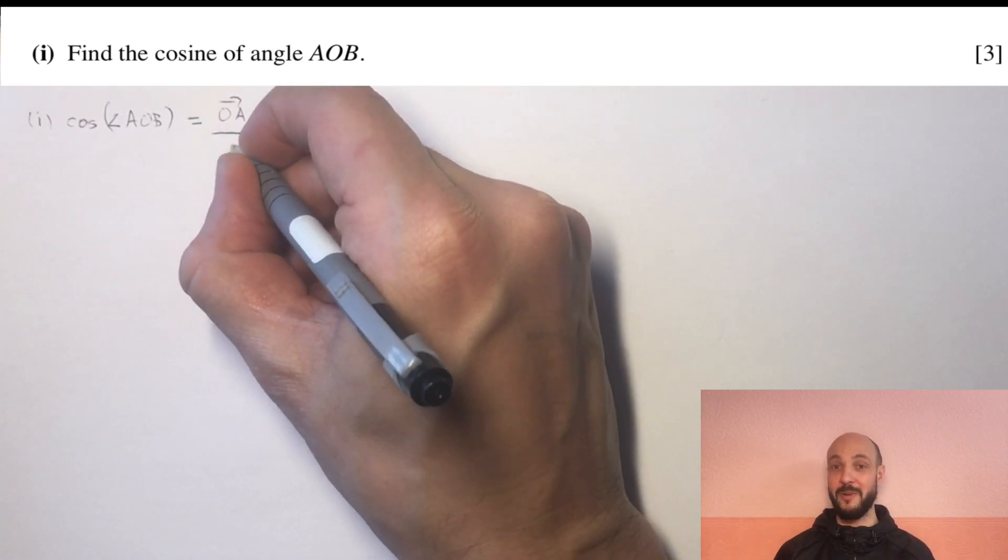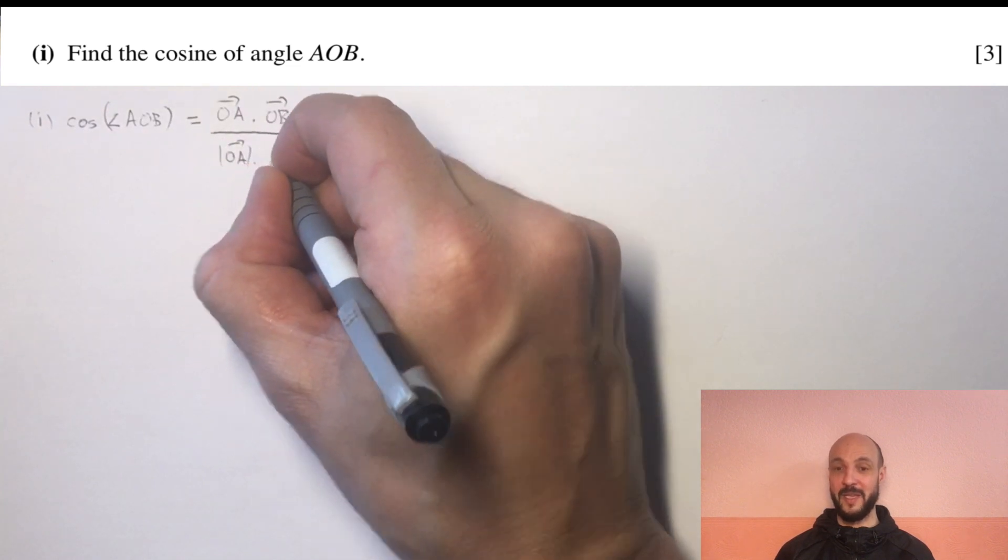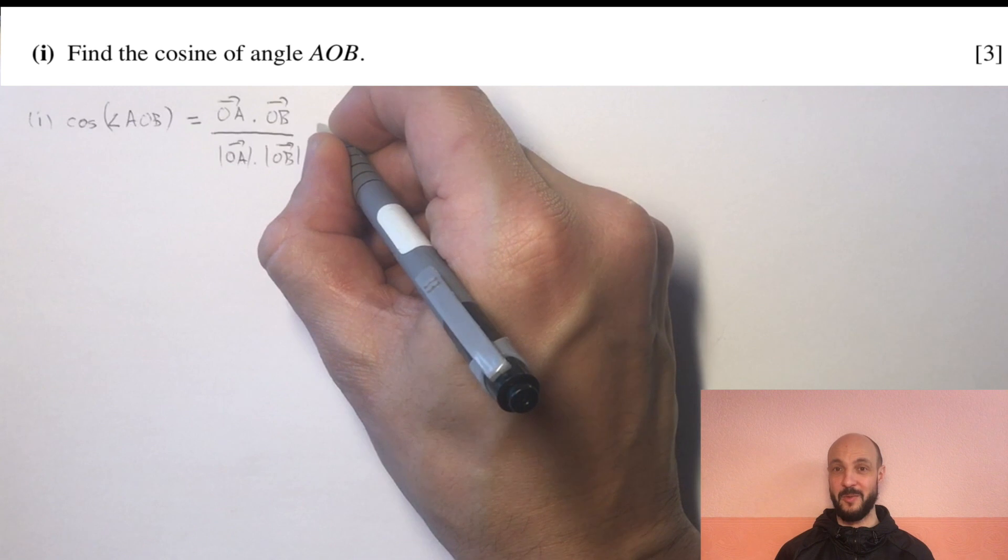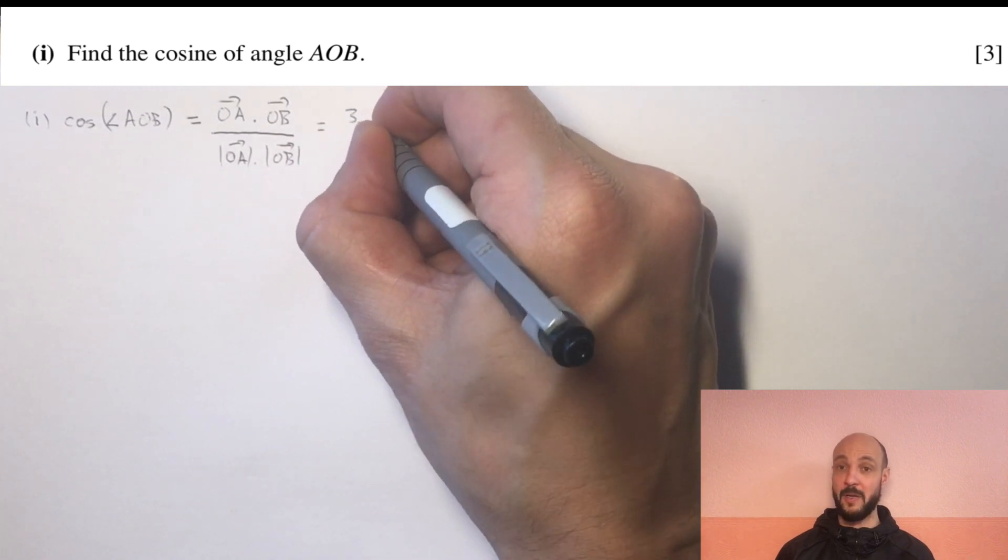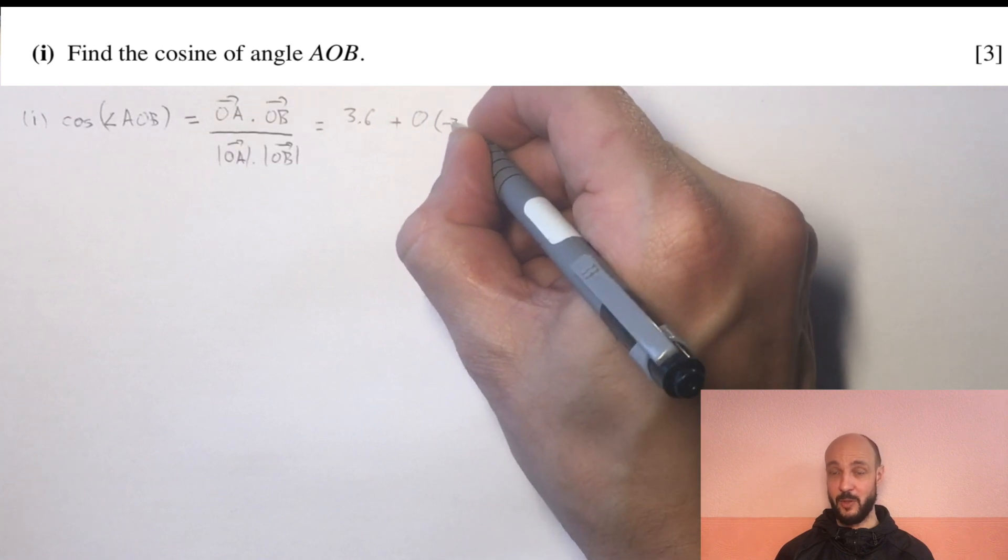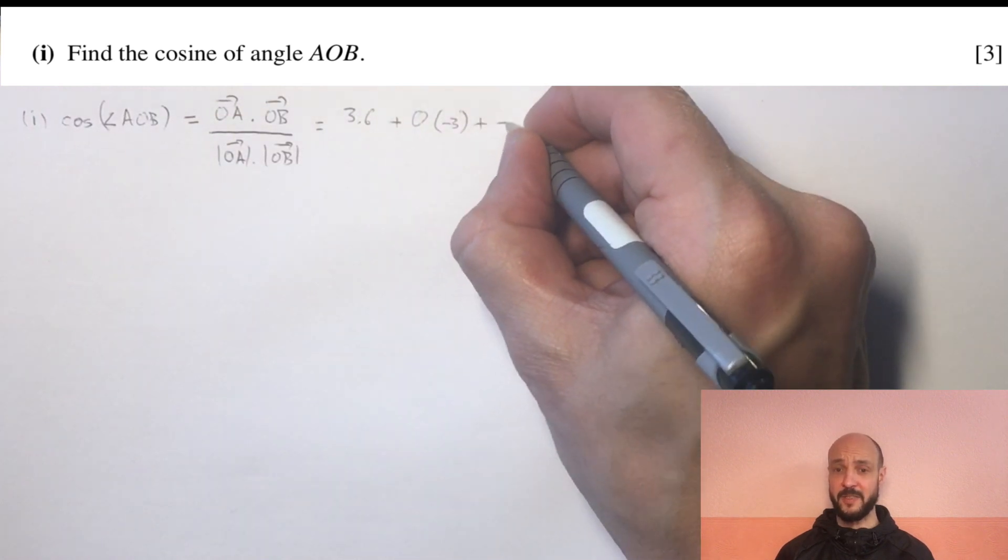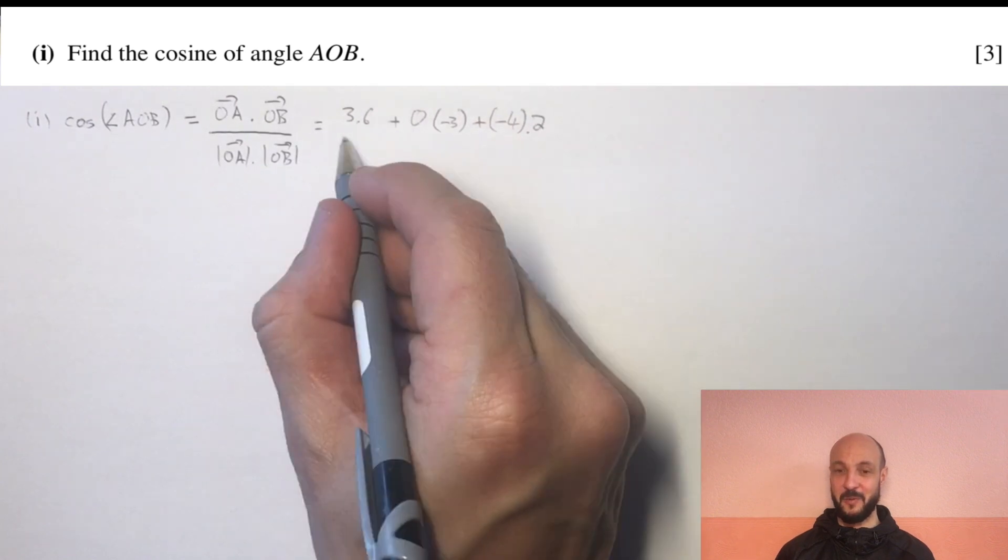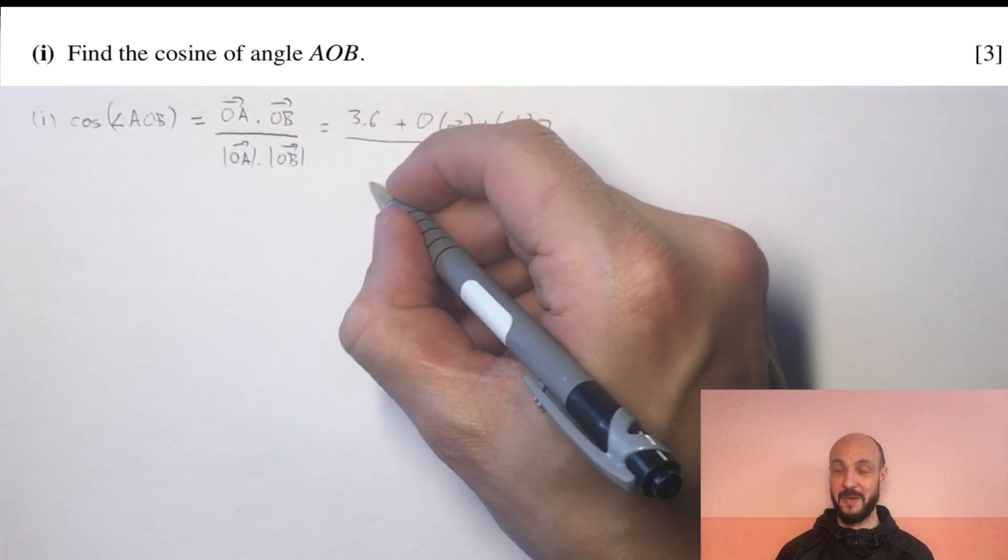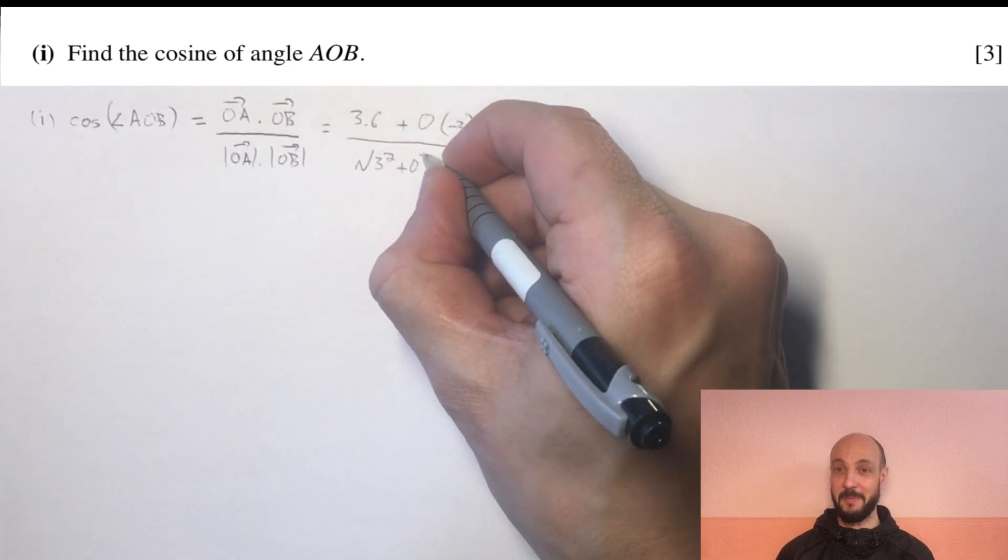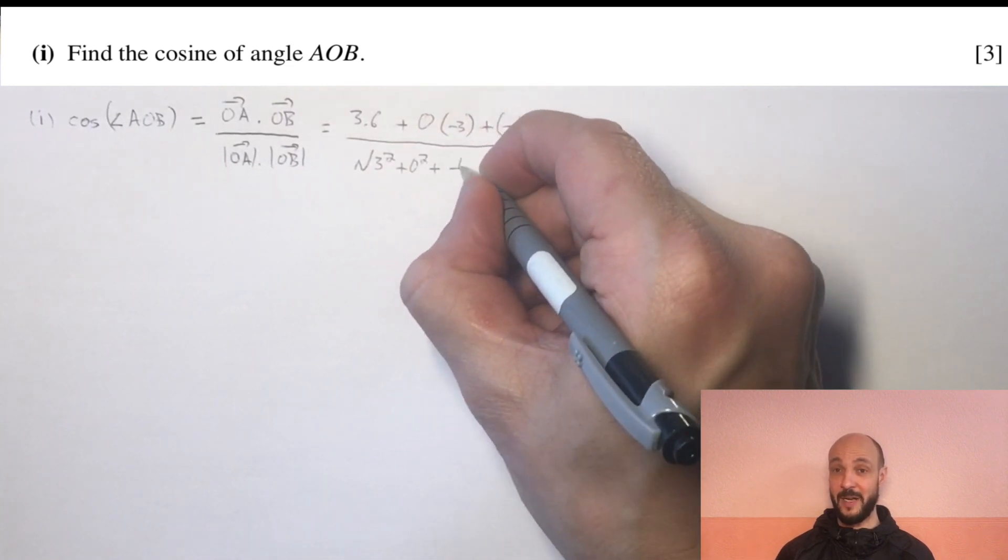So the numerator there, OA dot OB, we simply do component-wise multiplication: 3 times 6 plus 0 times minus 3 plus minus 4 times 2. For the product of the magnitudes, we use Pythagoras theorem: the square root of 3 squared plus 0 squared plus minus 4 squared times by the square root of 6 squared plus minus 3 squared plus 2 squared.